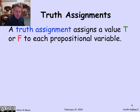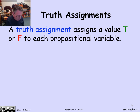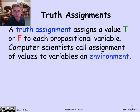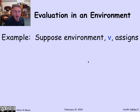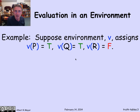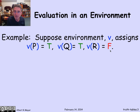In computer science jargon, this process of assigning values to variables is called an environment, although logicians would call it a truth assignment. So an environment tells you, given a variable, whether or not it's true or false. Let's look at an example of three variables, p, q, and r, that are true-false value. I've got an environment v in which p is true and q is true and r is false.